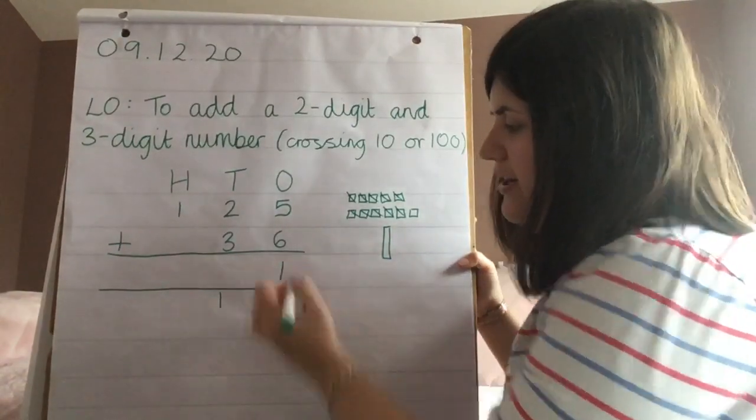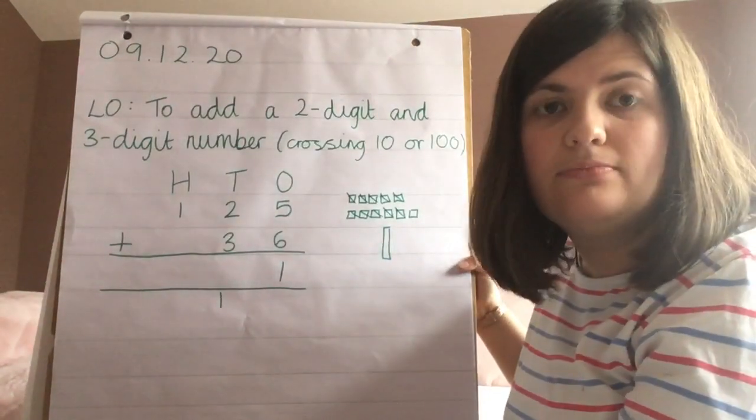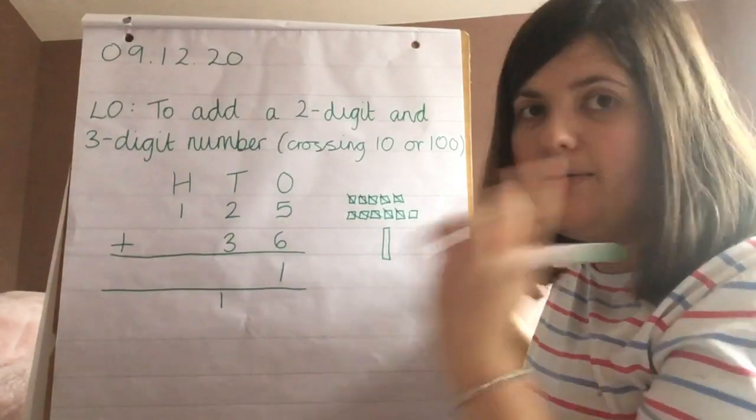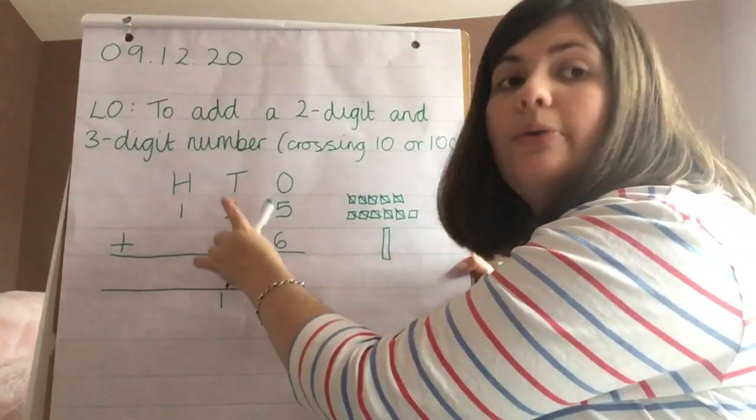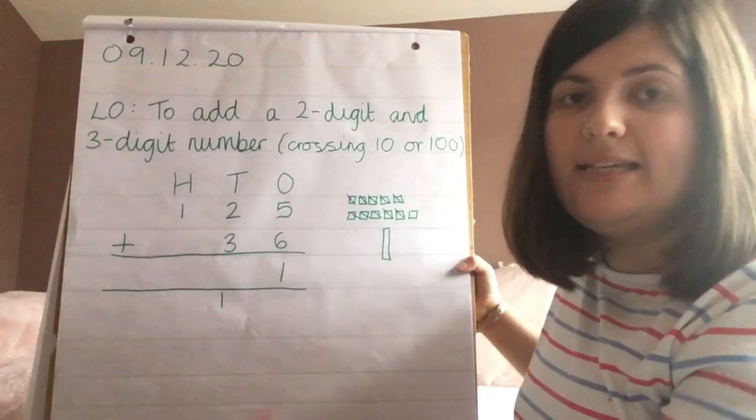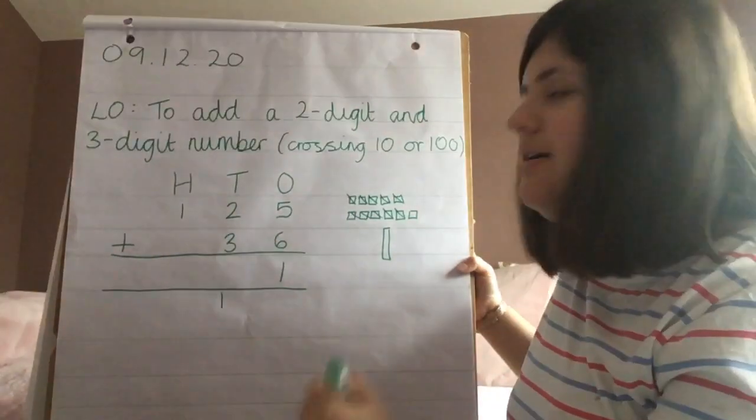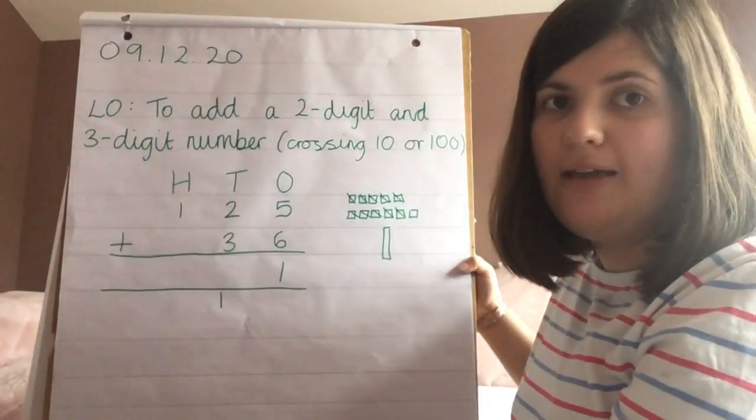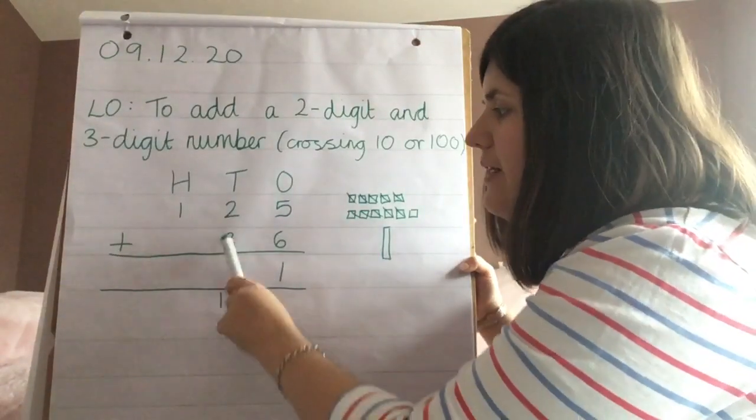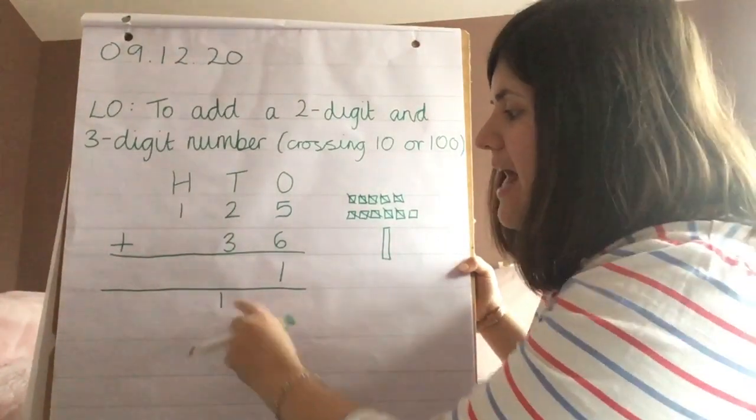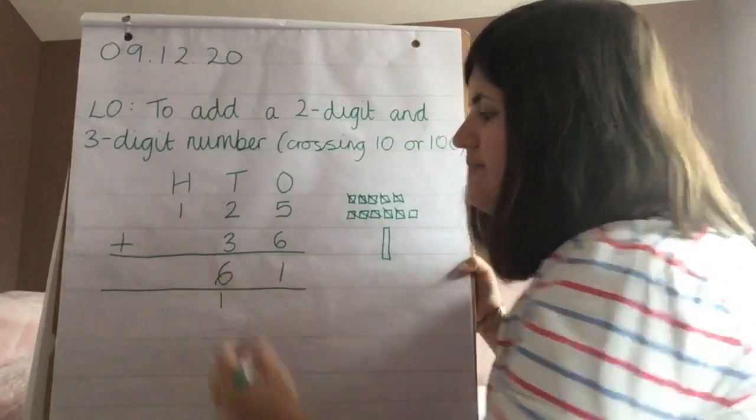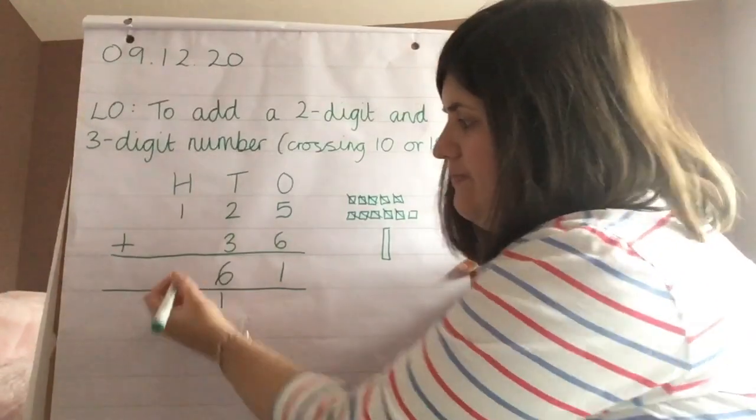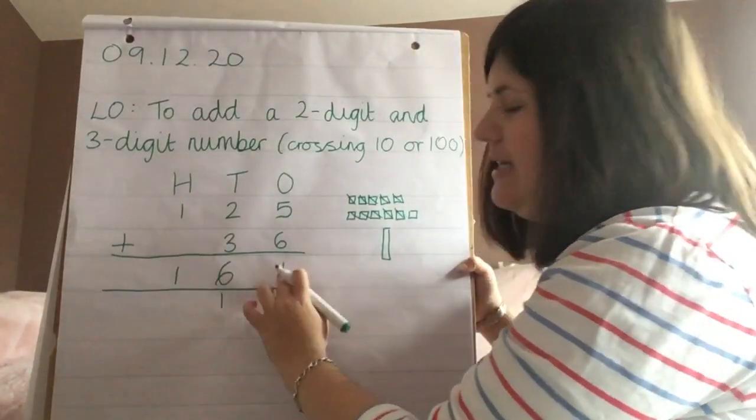Then the same again. If you need to draw your tens you can. I'm going to do this mentally, so because I know two tens add three tens equals five tens. But I'm not finished there. I cannot forget this ten that's down here. So it's two and three is five tens, add another ten is six tens. And then the hundreds, we're not adding any hundreds today, so that will stay the same. So one hundred and sixty-one.